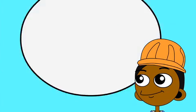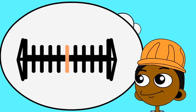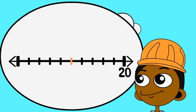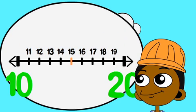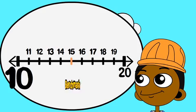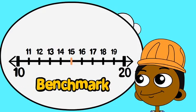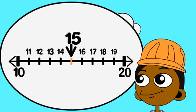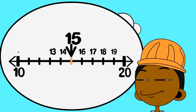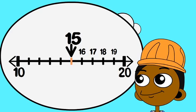Here are some useful things to know. You can show any number on a number line. Numbers to the right have a greater value than numbers to the left. Every number that ends in the digits 1 through 9 sits between two tens. The nearest ten on either side of your number is a useful benchmark, and the midpoint is the number that is halfway between the two benchmarks. If the number you want to round is less than the midpoint, round down. If it is at the midpoint or greater, round up.